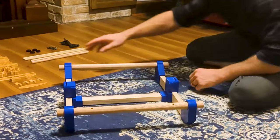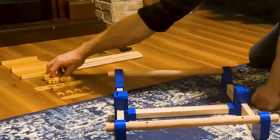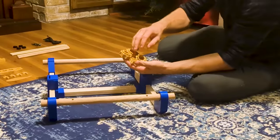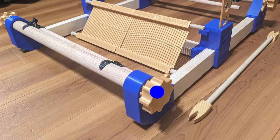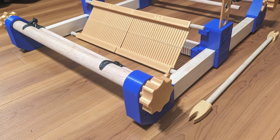From here, it's time to grab the end caps. These are the knobs that are going to hold and allow us to turn the warp beam and the cloth beam forward.